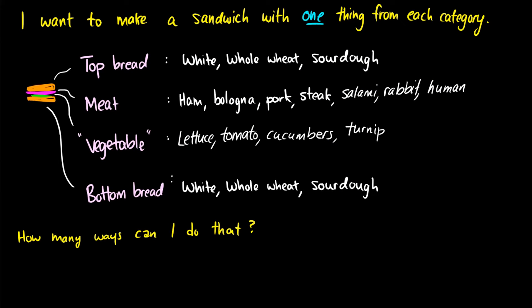So here's an example of a rule of product question. Suppose I want to make a sandwich, and I have four different steps where I have to make choices. So I need one piece of top bread, which can be white, whole wheat, or sourdough. I need one meat, so we have ham, bologna, pork, steak, salami, rabbit, and human meat. We want some vegetable, so this could be lettuce, tomato, cucumbers, or turnip. And we also have a bottom bread, which can be white, whole wheat, or sourdough. We go wild here. The top and bottom bread can be different. So how many ways can we do that?